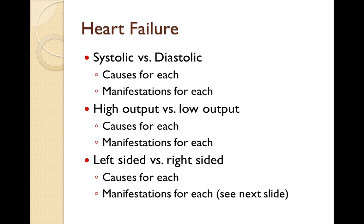Causes for right-sided heart failure are conditions that weaken the muscle and restrict blood flow to the lungs — things like stenosis or regurgitation of the tricuspid or pulmonary valves, which tend to be less frequently occurring. Infections with vegetative lesions from endocarditis could certainly be a problem. Cardiomyopathies are more likely to lead to right-sided heart failure. And remember, if the left side fails, it can eventually lead to right-sided heart failure.